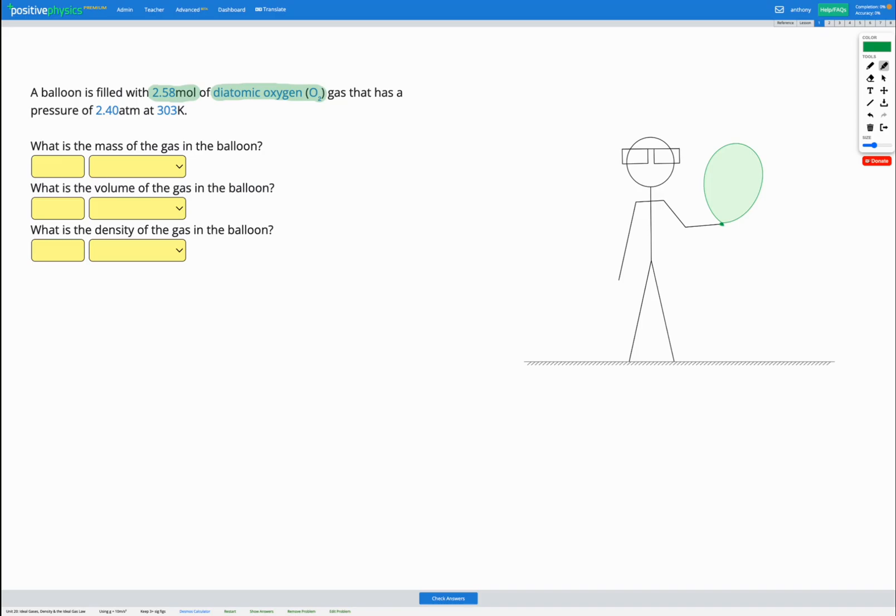That has a pressure of 2.4 atm at a temperature of 303 kelvin. Our goal is going to be finding the mass of gas in the balloon, the volume of gas in the balloon, and finally the density of the gas in the balloon.